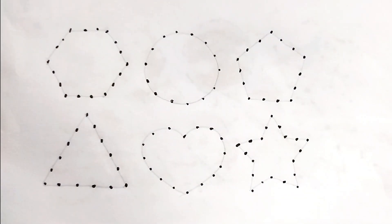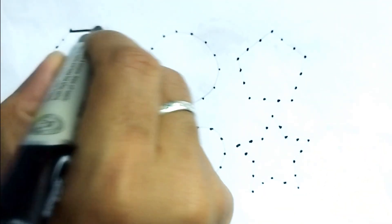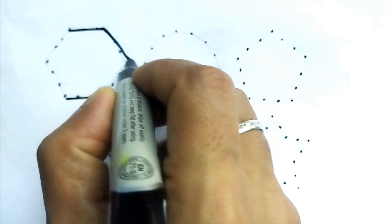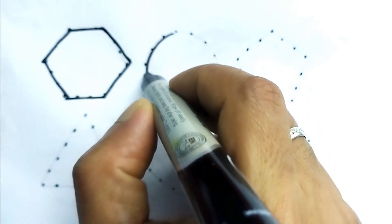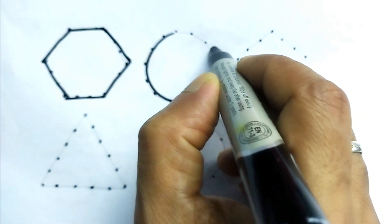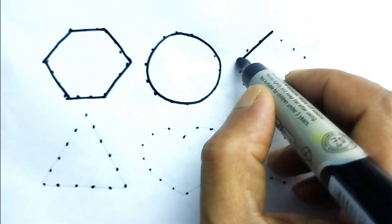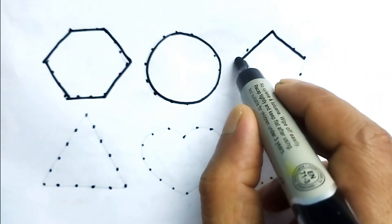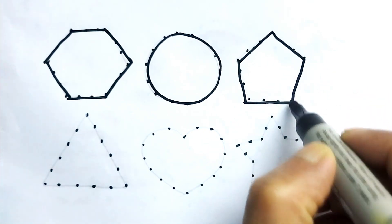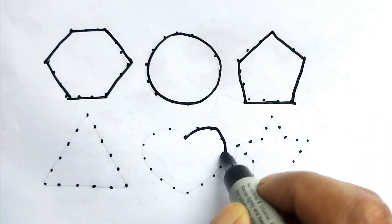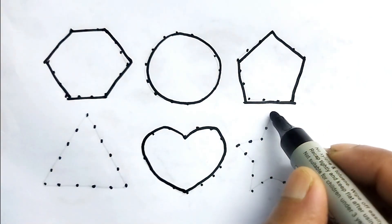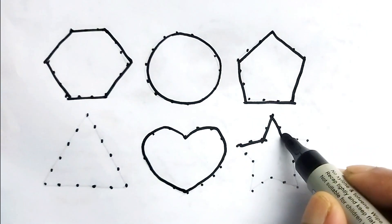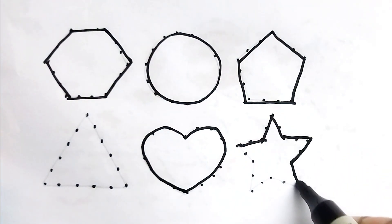Hello kids, how are you today? We will learn different types of shapes and different types of colors. This is a hexagon. Yes, this is a hexagon. This is a circle. This is a pentagon. This is a heart shape. This is a star.